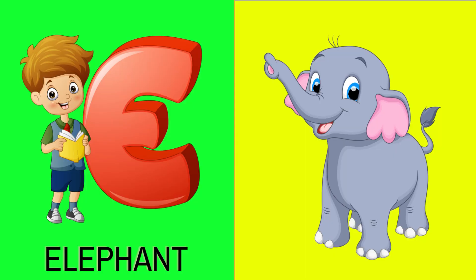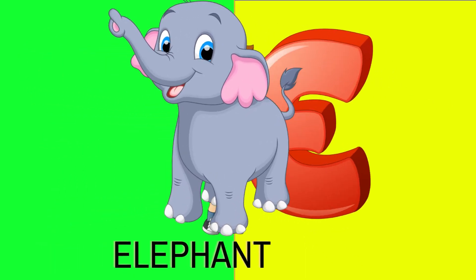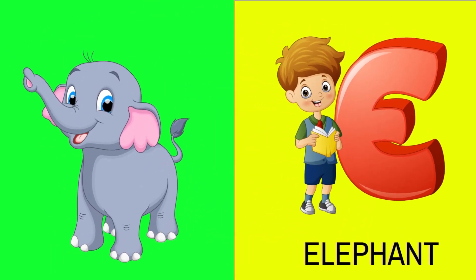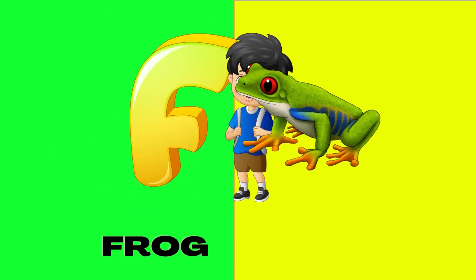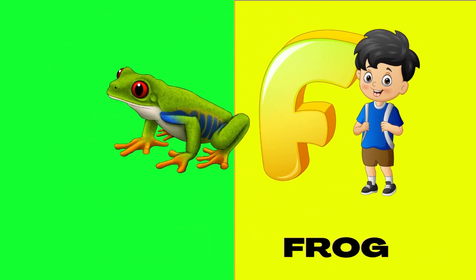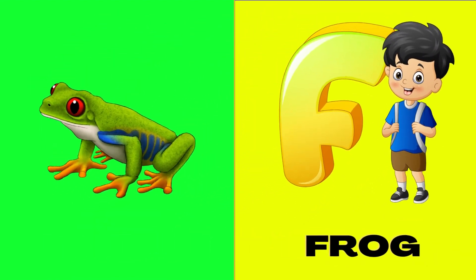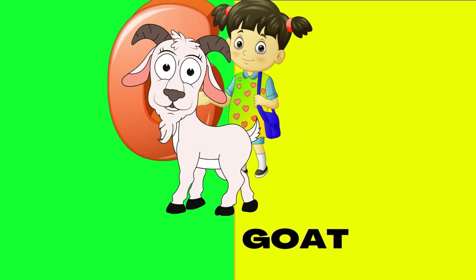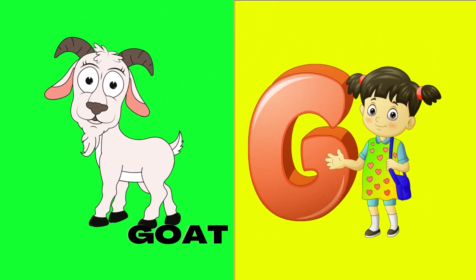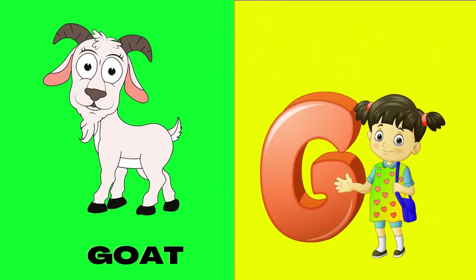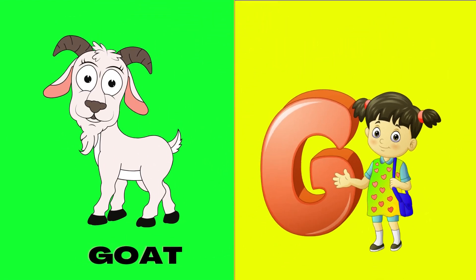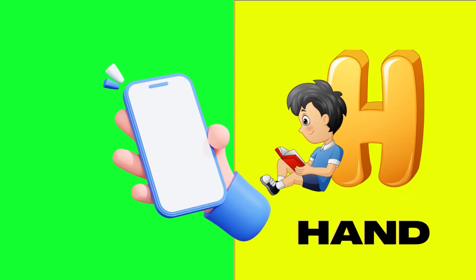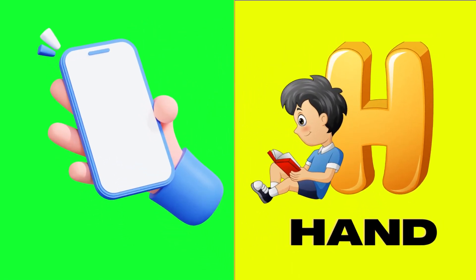E is for elephant, e-e-elephant. F is for frog, f-f-frog. G is for goat, g-g-goat. H is for hand, h-h-hand.